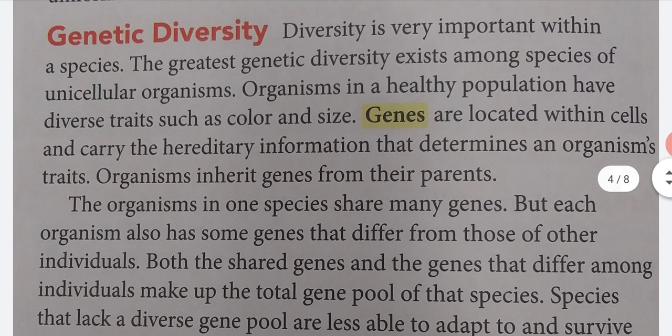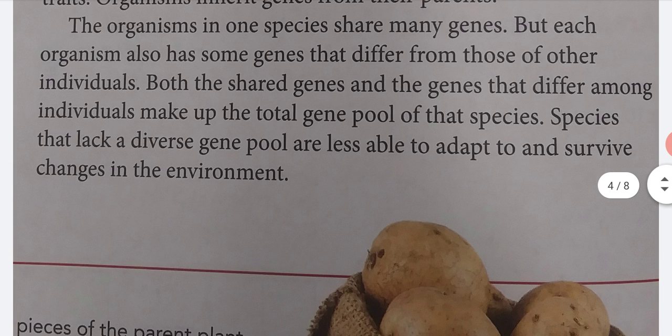Genetic diversity. Diversity is very important within a species. The greatest genetic diversity exists among species of unicellular organisms. Organisms in a healthy population have diverse traits, such as color and size. Genes are located within cells and carry the hereditary information that determines an organism's traits. Organisms inherit genes from their parents. The organisms in one species share many genes, but each organism also has some genes that differ from those of other individuals. Both the shared genes and the genes that differ among individuals make up the total gene pool of that species. Species that lack a diverse gene pool are less able to adapt and survive changes in their environment.